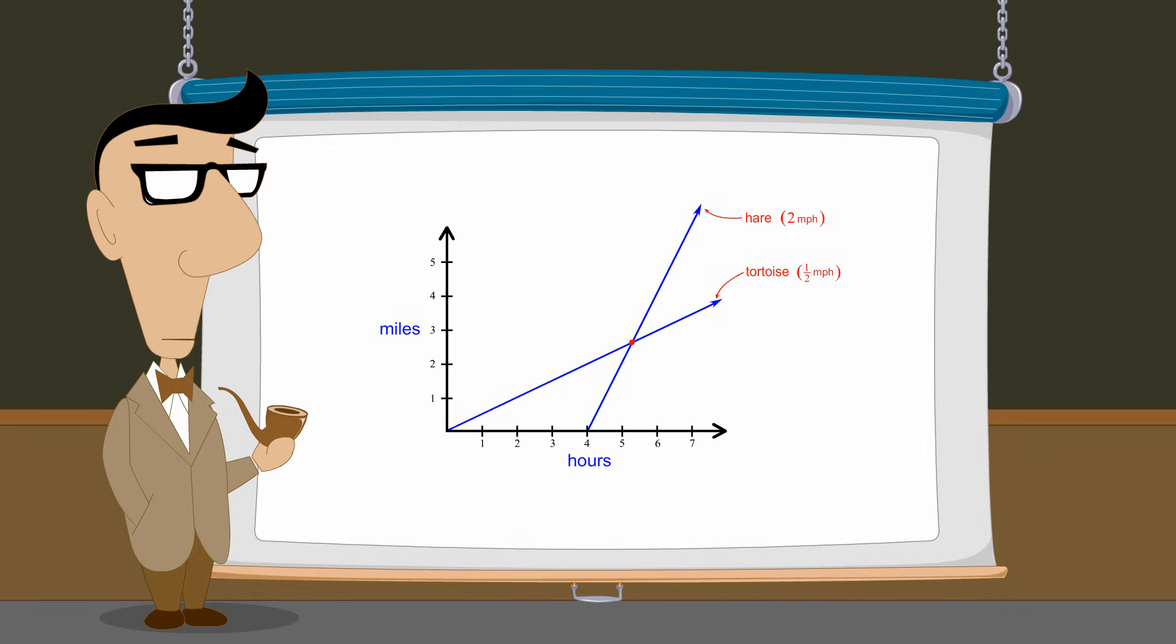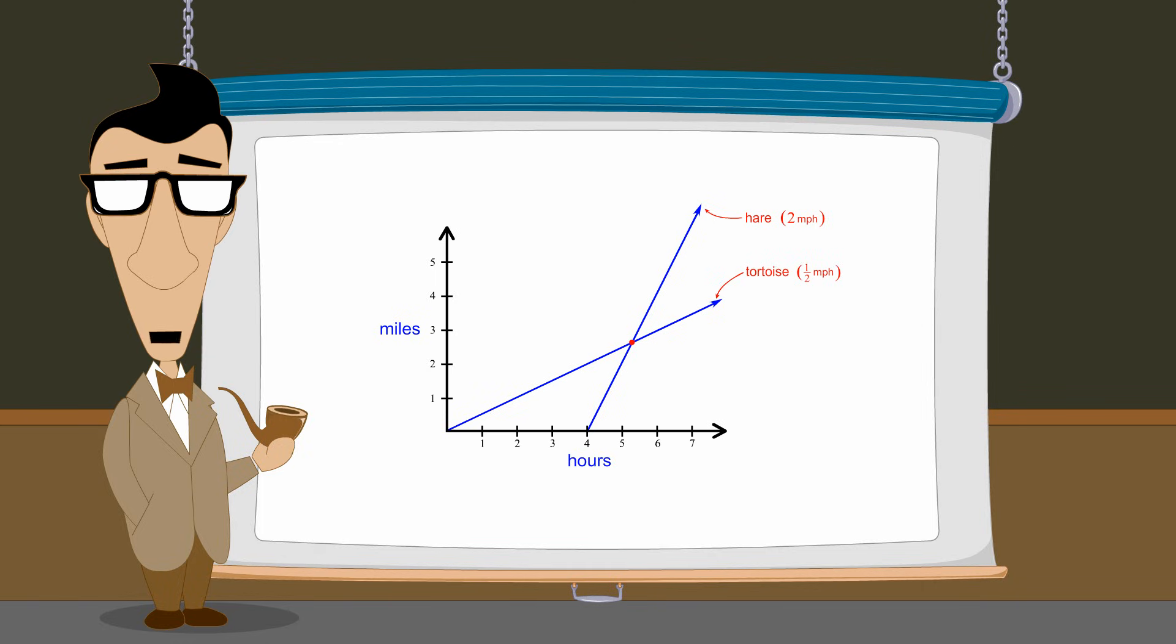At the end of the lecture, we derived equations for these graphs. In this lecture, we will see how to use these equations to mathematically determine the coordinates of their intersection point, and thus the exact time and distance when the tortoise and hare meet.